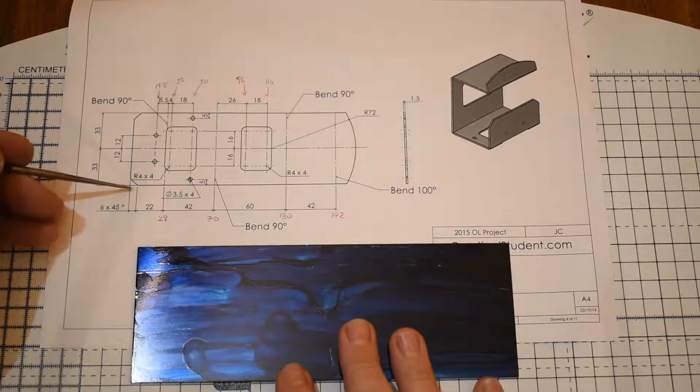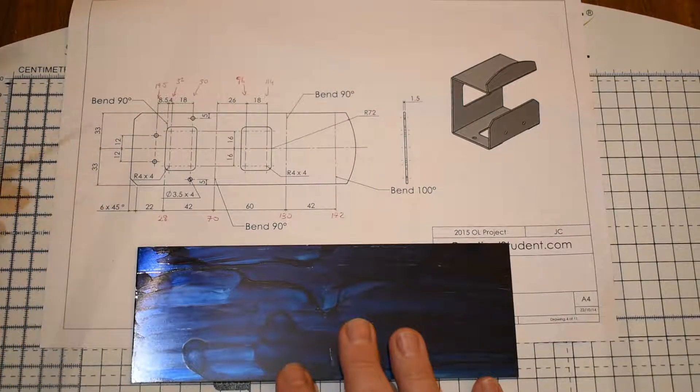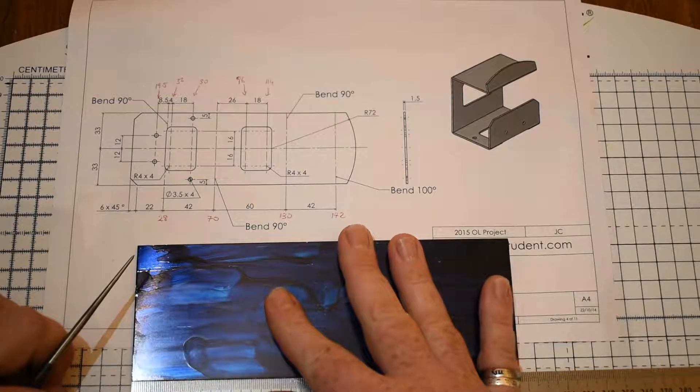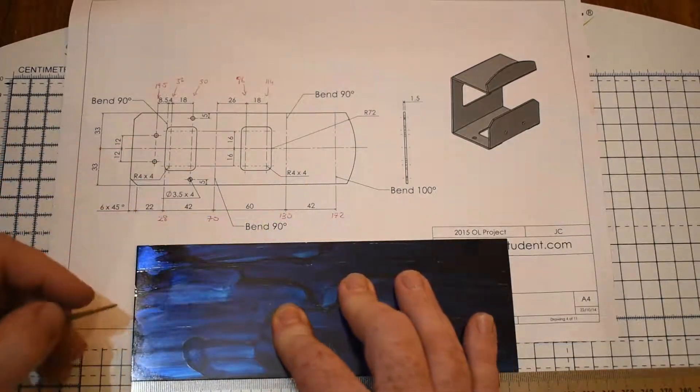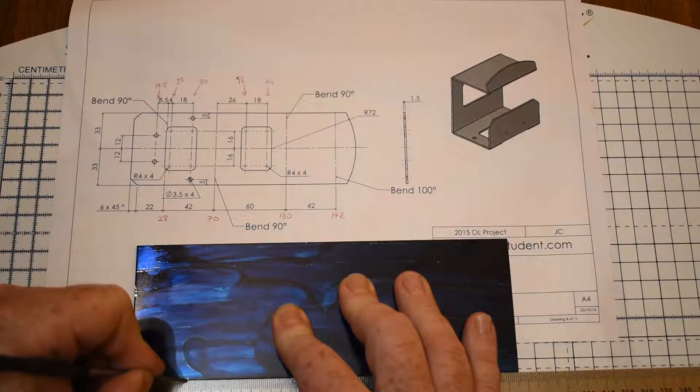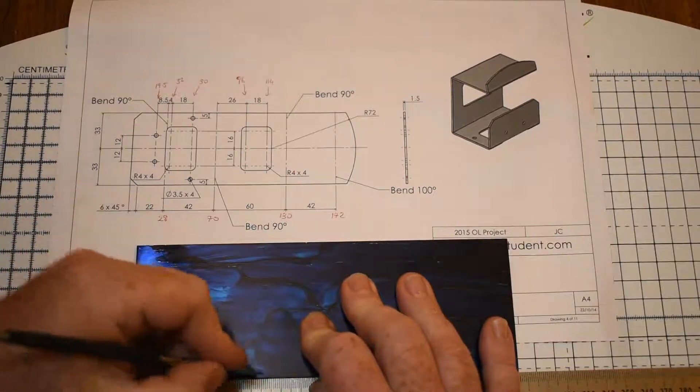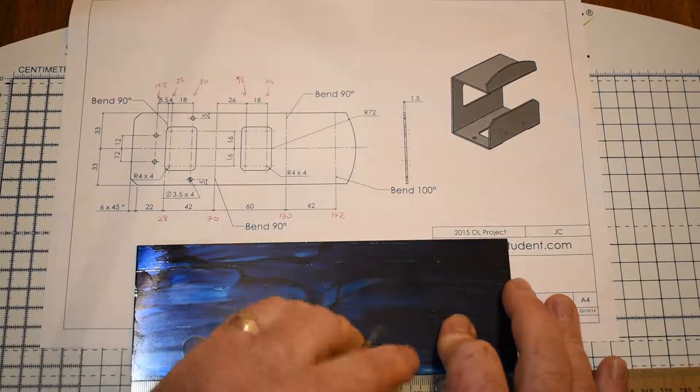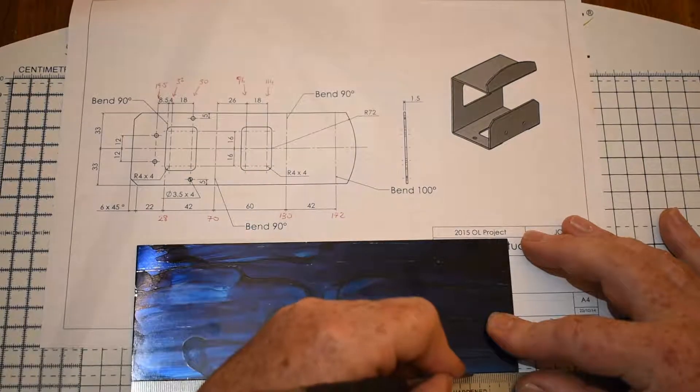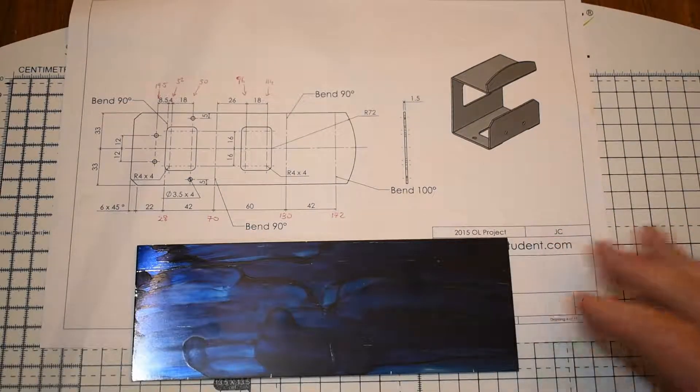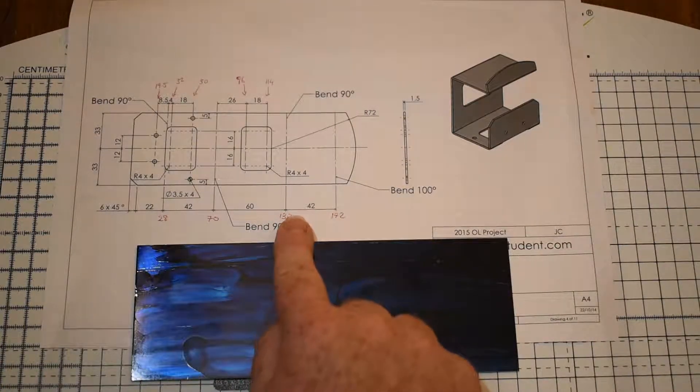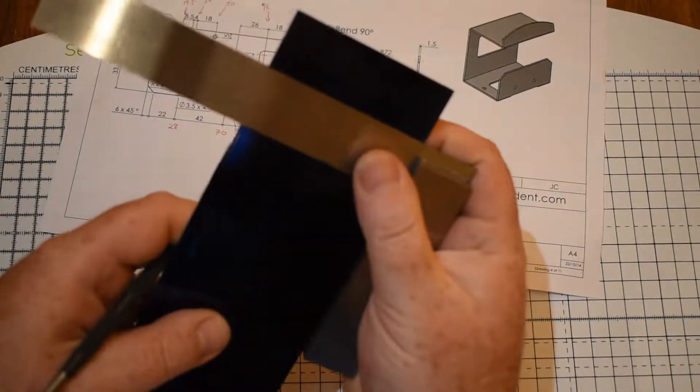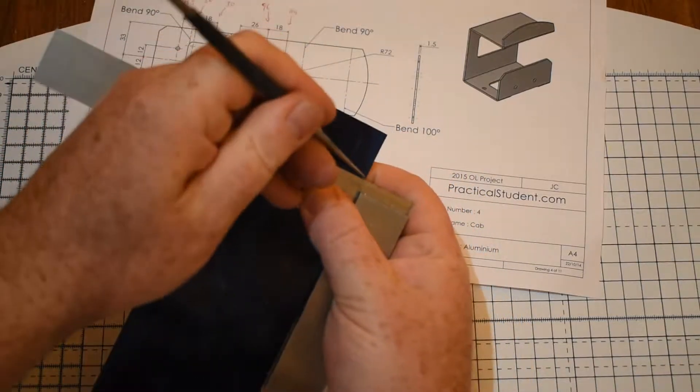I'm going to start in the bottom left hand corner and I'm going to identify this first section here which is 28 across. I'm actually going to identify all of these different sections so 28, 70, 130 and 172. The 172, the 130, the 70 and the 28 are all bend lines. So I'm going to dash those as opposed to the normal straight line.